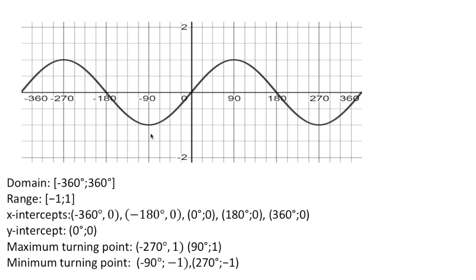With this interval we have two maximum values. The first maximum point has coordinates (−270, 1) and the second maximum point has coordinates (90, 1). For the minimum turning points, the first has coordinates (−90, −1) and the second has coordinates (270, −1).